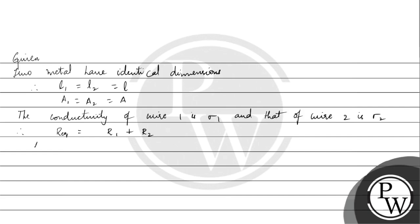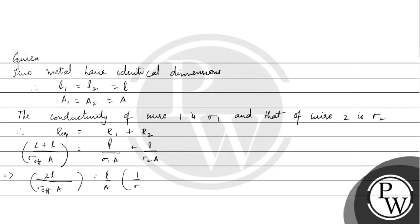The equivalent resistance becomes L plus L, because they are of the same dimensions, divided by the effective conductivity into the area of cross section. This equals L divided by σ1 into A, plus L divided by σ2 into A. We can write the left side as 2L divided by effective conductivity into A. Taking L by A common, this becomes 1 by σ1 plus 1 by σ2, which further simplifies to L by A into σ1 plus σ2 divided by σ1 into σ2.